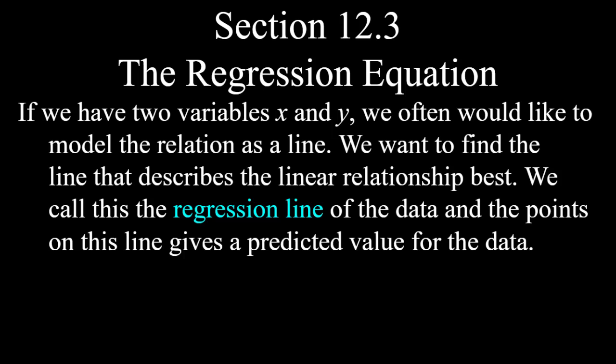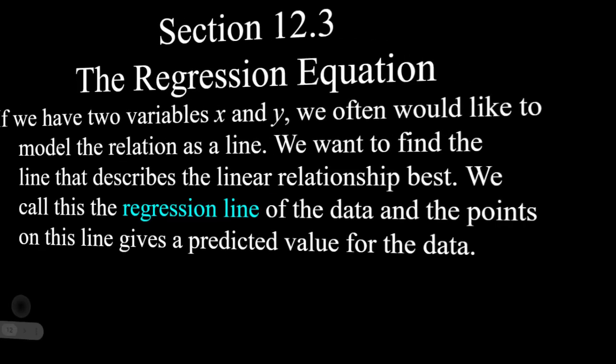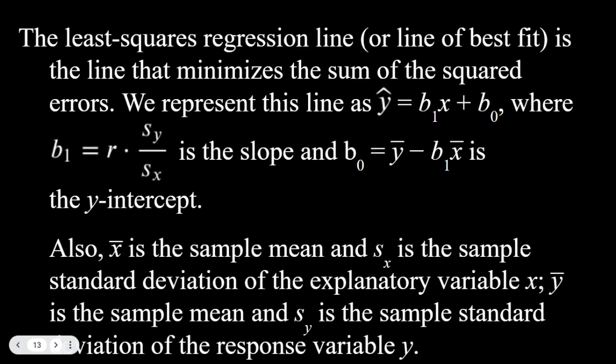The idea is we've got all these points. If it looks like a linear relationship, we can draw a line to represent that linear relationship, and then the points on that line are predicted values for the data. The least squares regression line, or the line of best fit, is the line that minimizes the sum of the squared errors. The error is the distance between the line and the points on the scatter plot.